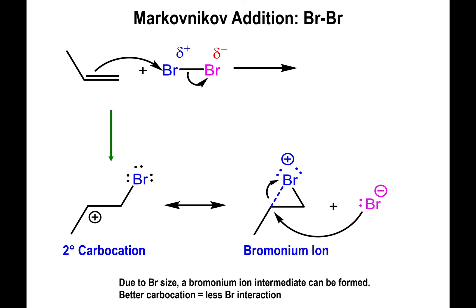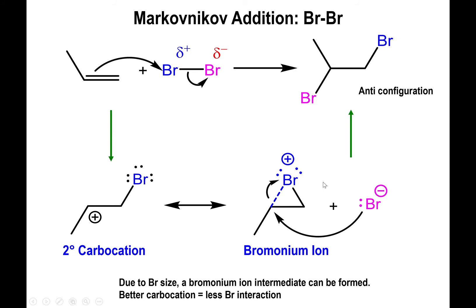The bromide attacks the more substituted carbon, giving what we would call a Markovnikov product — though that label is somewhat redundant here since both atoms being added are the same. You end up forming a dibromo compound. Critically, because the attack can only occur opposite to where the bromonium ion is positioned, the outcome is an anti-configuration: the newly added bromo group is opposite in phase to the bromo group from the bromonium ion intermediate.